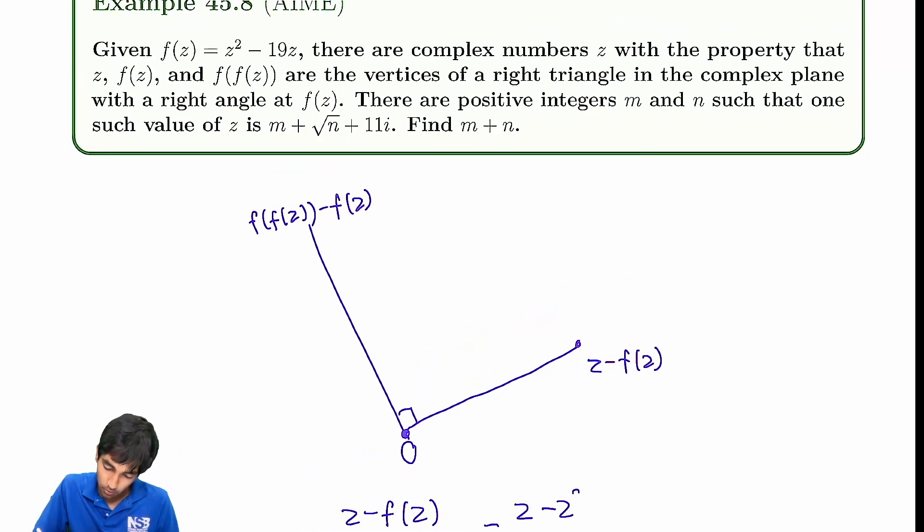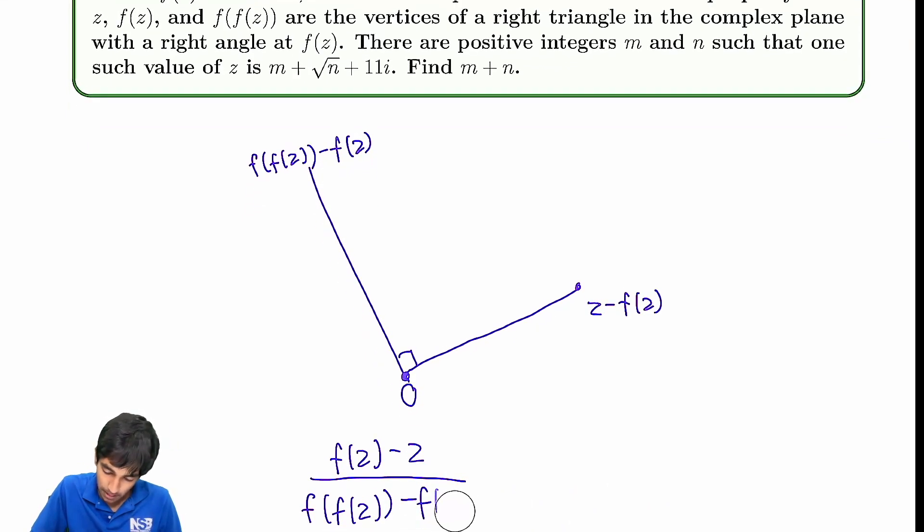Now we just have z minus f(z) equals f(f(z)) minus f(z). z minus z squared plus 19z. And then f(f(z)) is just, okay, this is a little bit computationally heavy. You know what? I'm going to write this as f(z) minus z. It's the same thing if you think about it. f(z) minus z and f(z) minus f(f(z)).